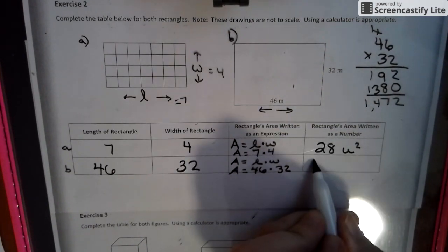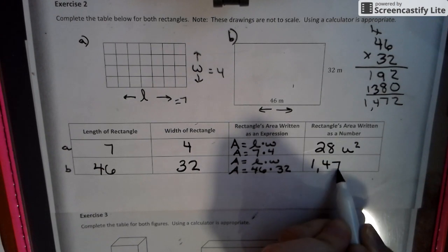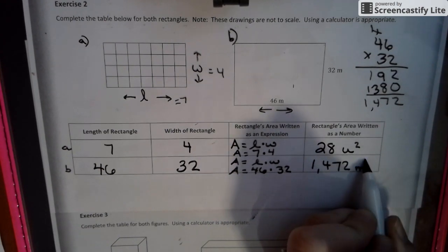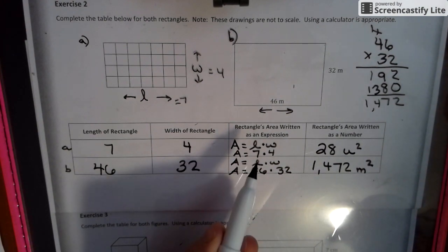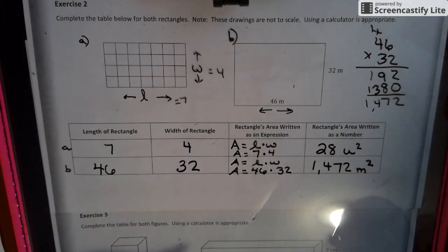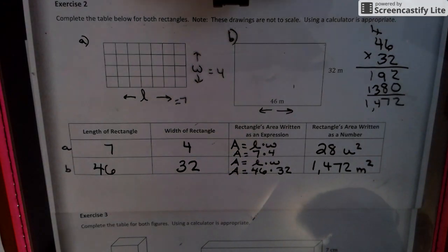Our rectangle's area is 1,472 meters squared. Notice that we take our length and our width and replace them with numbers. That's the concept of this unit.